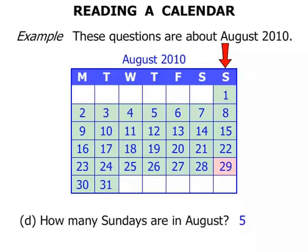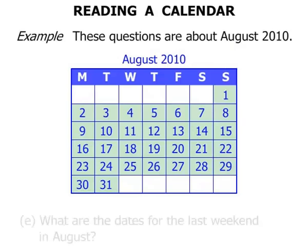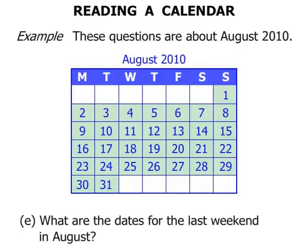What are the dates for the last weekend in August? A weekend is comprised of Saturday and Sunday, and we want the last weekend. So looking at that, we can see that the very last Saturday and Sunday in August is the 28th and 29th of August.